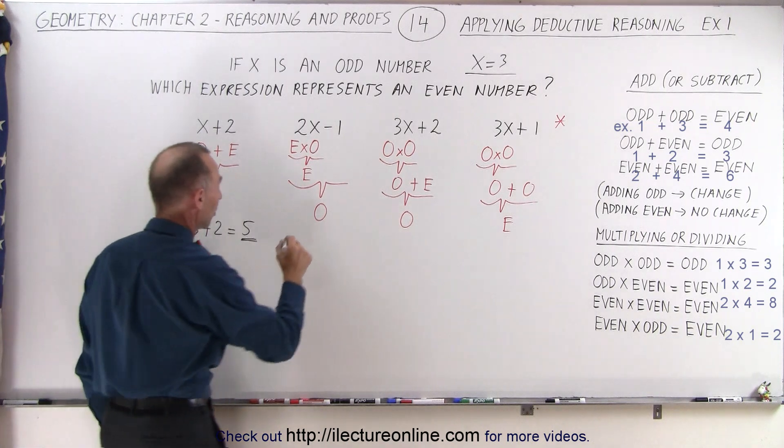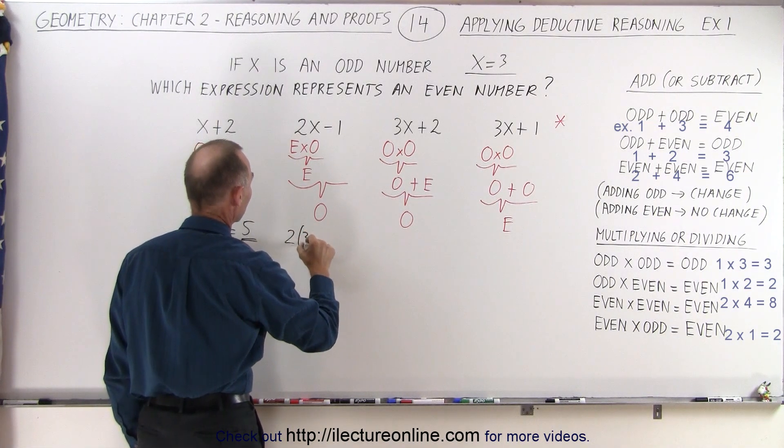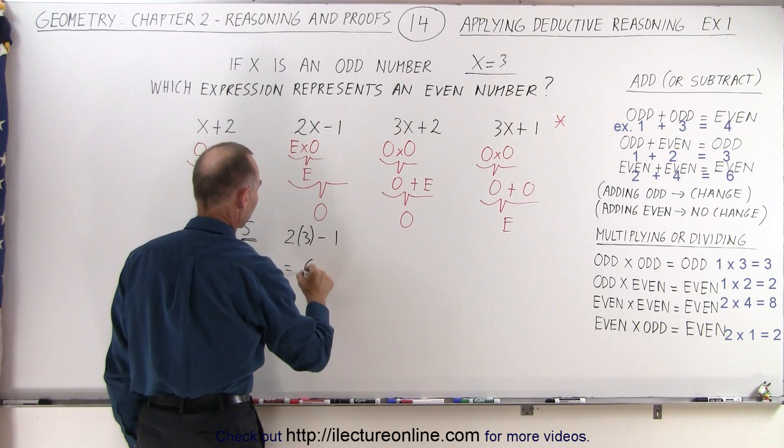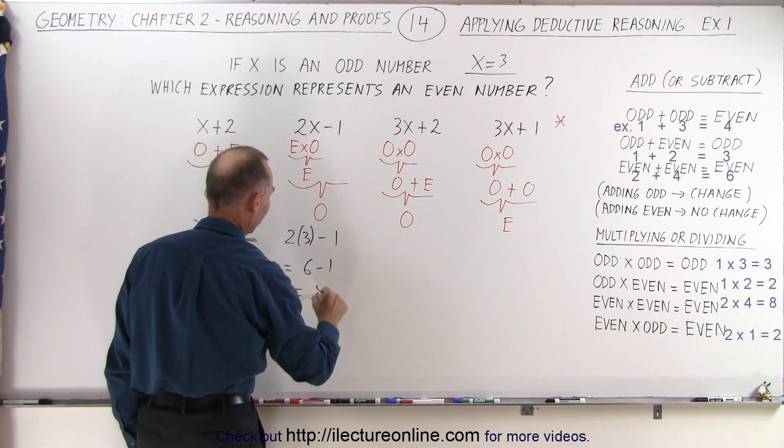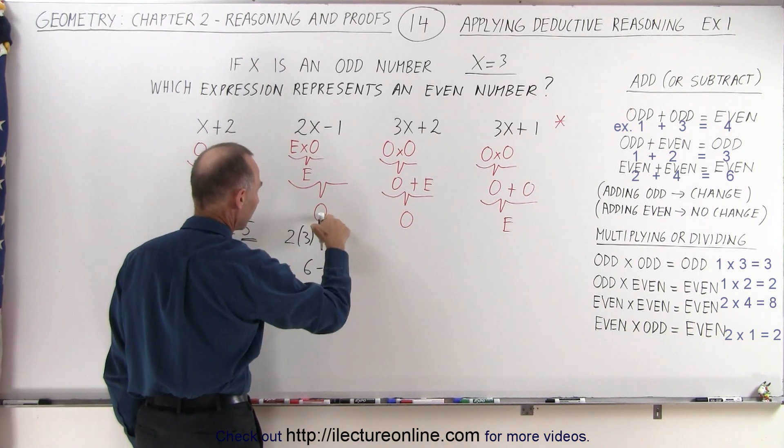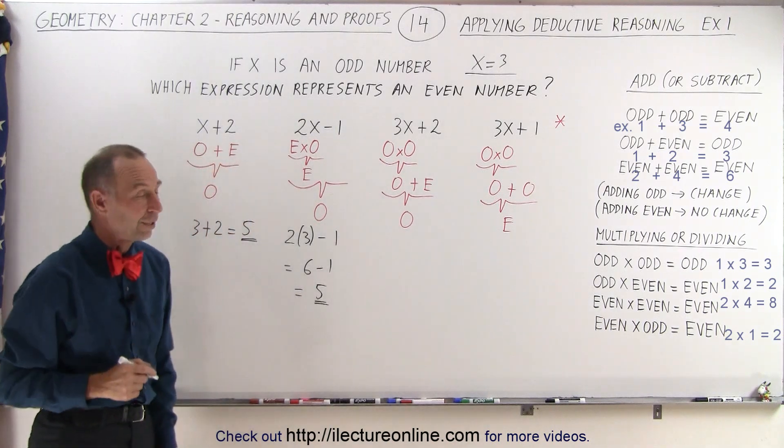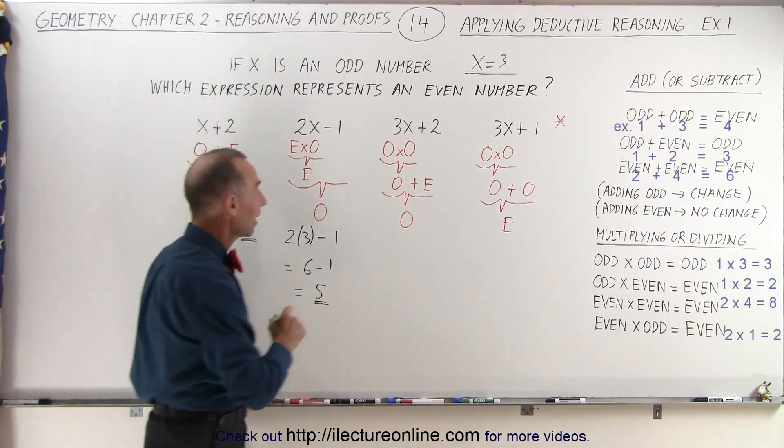The next expression, we take 2 times 3 minus 1. That's equal to 6 minus 1, which is equal to 5. Again, 5 is an odd number, and so it looks like we did it correctly.